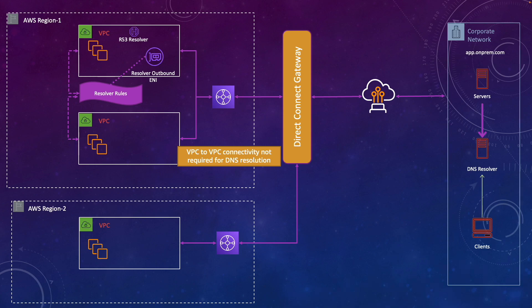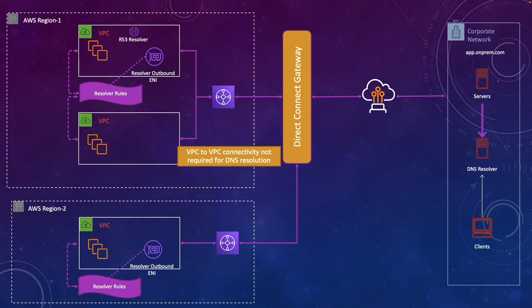What happens if you have a second region? In that case you need to create another outbound endpoint in that region. You also create another resolver rule there, because resolver rules are regional and cannot be shared across different regions. Similarly, you create the outbound endpoint, create the rules, and then resources within VPCs in that region can resolve DNS names for the on-prem environment.